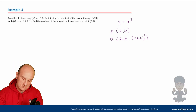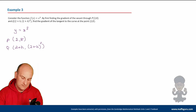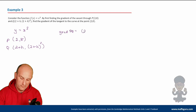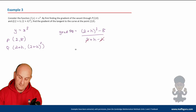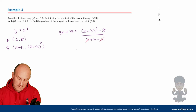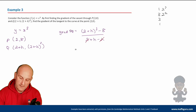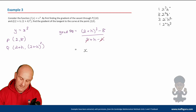The gradient of PQ is Y₂ minus Y₁ over X₂ minus X₁, which is (2 + H)³ minus 8, all over (2 + H) minus 2, giving H on the bottom. Using Pascal's triangle with coefficients 1, 3, 3, 1: we get 2³ + 3(2²)H + 3(2)H² + H³, which is 8 + 12H + 6H² + H³.